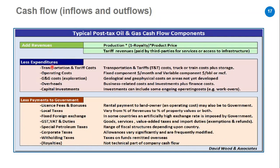The outflow of our cash flow includes transportation and tariff costs, operating costs which are the daily costs to run the business, exploration costs such as seismic and exploration drilling, overheads which are business-related costs and employee salaries, and capital investments like facilities and drilling wells. We also subtract payments to the government such as bonuses, taxes, special petroleum taxes like in the UK, and corporate tax. All of these are subtracted from revenue to get the net profit.